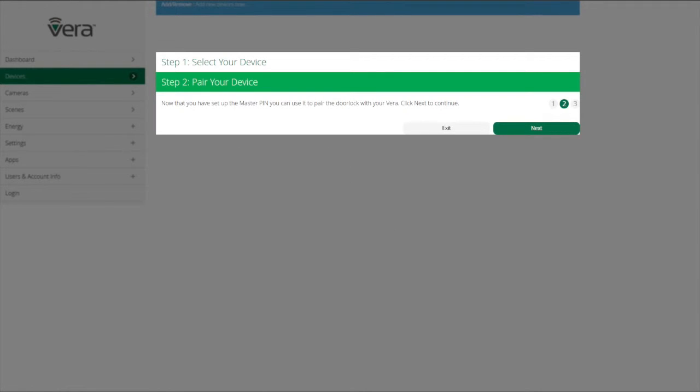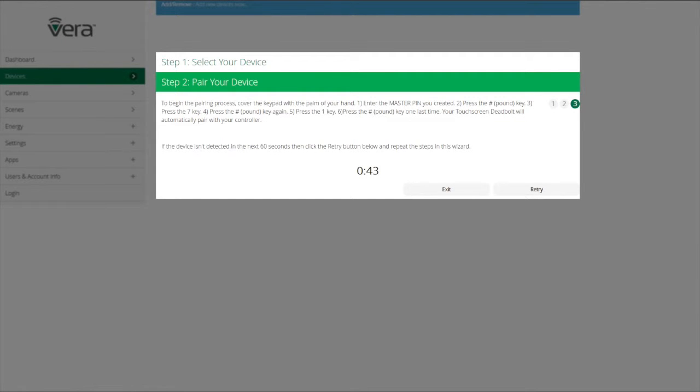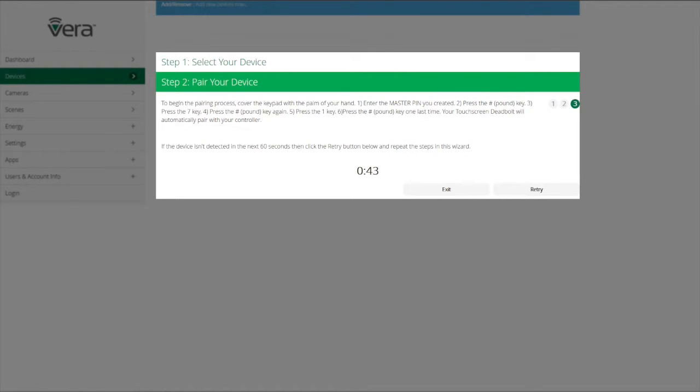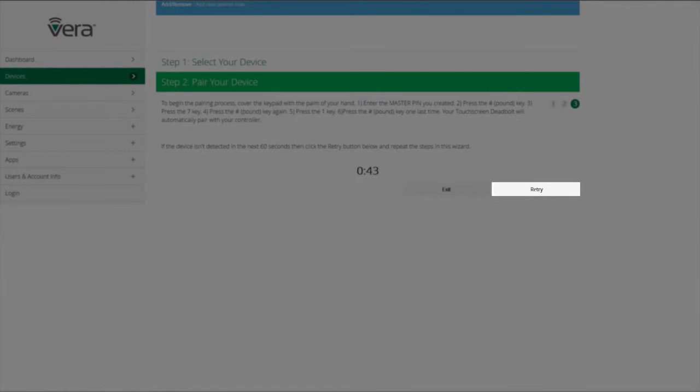When we click Next from this screen, it's going to put our Vera controller into pairing mode. You now have 60 seconds to pair your device onto the network. Make sure to follow the instructions on the screen. Take note at the top of the screen that it tells you Add New Devices Now. Once your device is detected, the Retry button will change to Next. Click Next to continue the process.